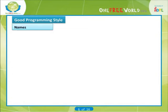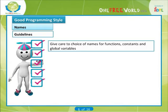Now let's look at names. You should know exactly what each variable, procedure, and function is for. Also explain them carefully. Constants should also be given names. Here are some guidelines: give special care to the choice of names for functions, constants, and global variables. Names should be meaningful and should suggest clearly the purpose of the sub-program, variable, and the like.